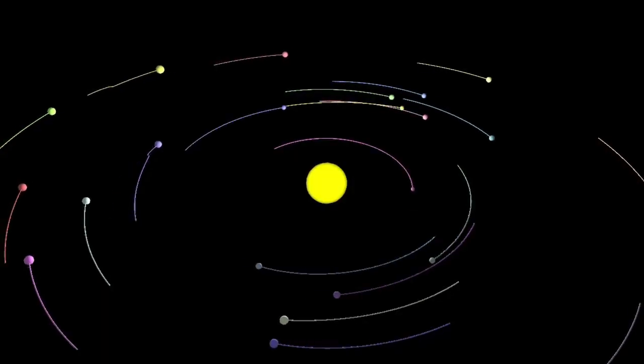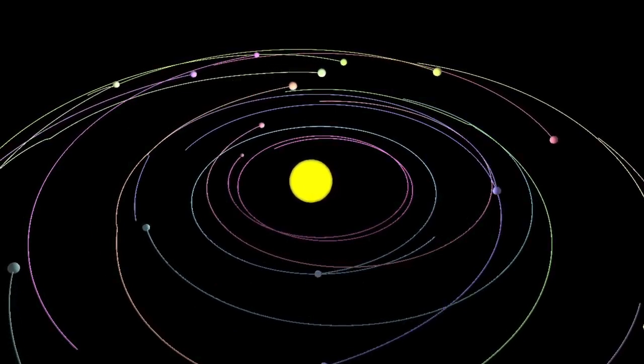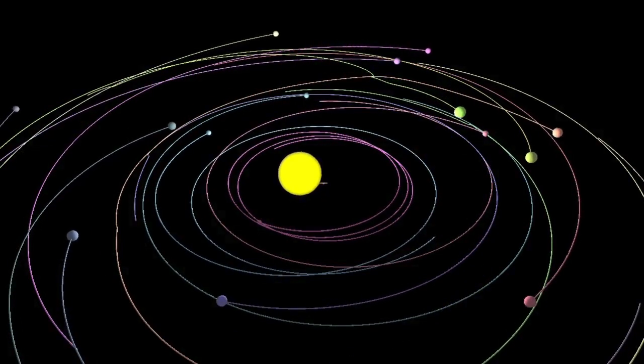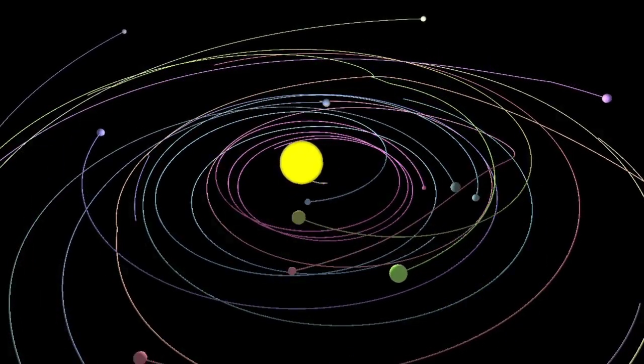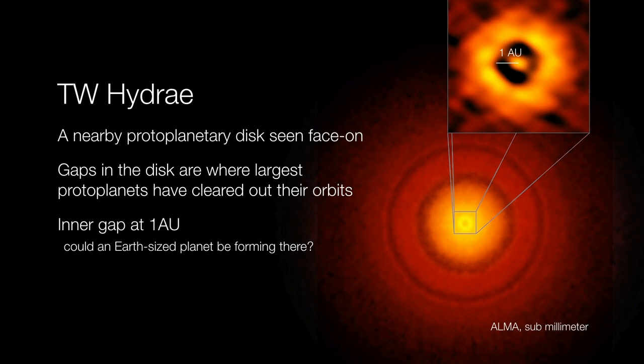They begin to clear out their orbits. You can even do a simple computer simulation like we have here, and you can easily see how, as objects collide into one another, there are fewer and fewer of these objects remaining. And so when we look in systems like TW Hydra, we can actually see those rings. We can actually see those lanes being carved out by proto-planets within the disk.